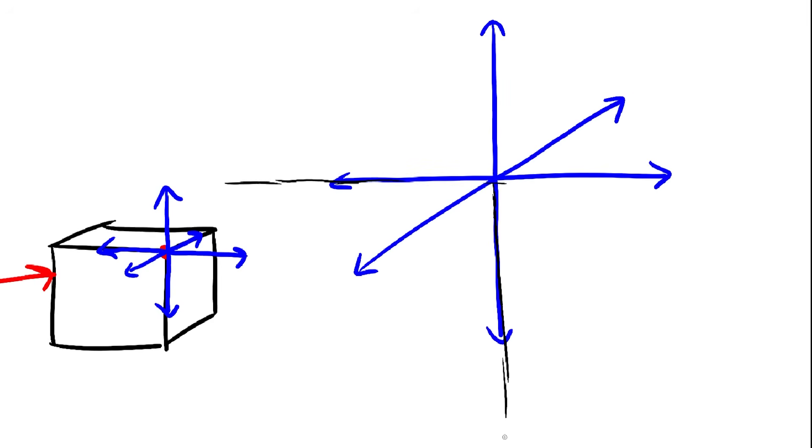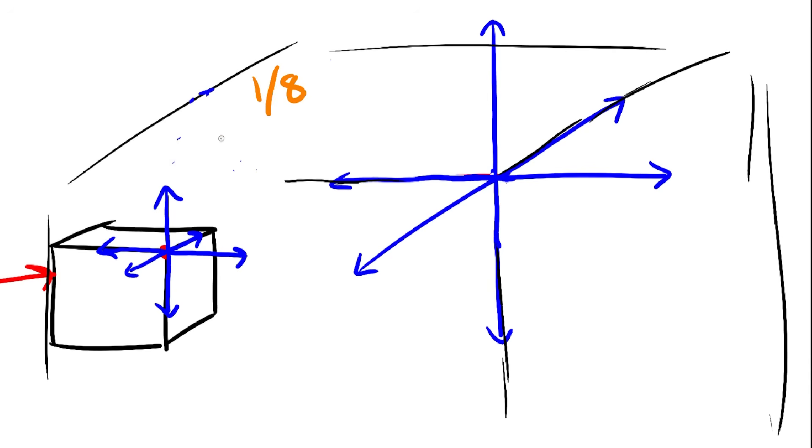This is important, so take some time to really visualize this. Right now, only one of those eight octants is filled with cube, and notice we need all eight to be filled if we want no gaps between our cubes. So let's fill the other seven octants by adding in some cubes. There are two ways to do this.